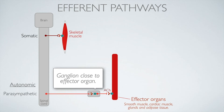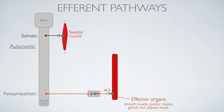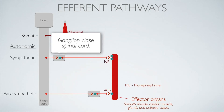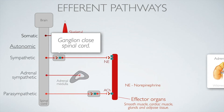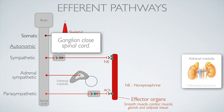Parasympathetic pathways are active when you're relaxed. The other two are active when you're stressed or very active. The first is the sympathetic pathway — it also has a ganglion, but positioned close to the spinal cord, and the neurotransmitter from the second neuron is norepinephrine. The final pathway is the adrenal sympathetic pathway, which excites a gland called the adrenal medulla.